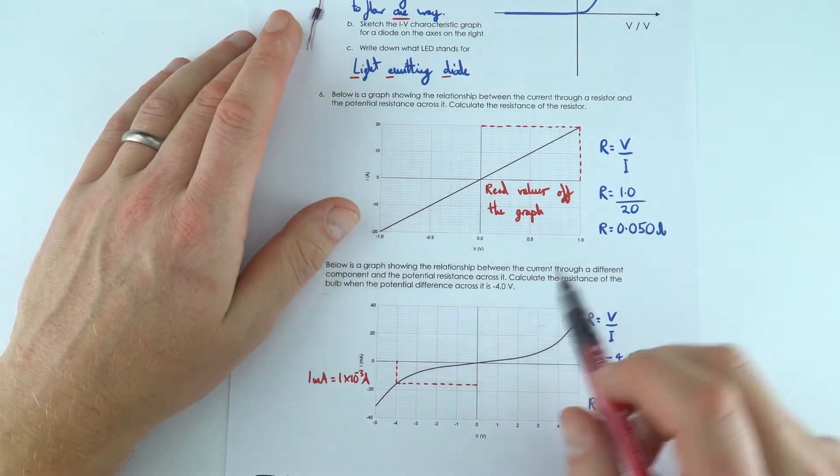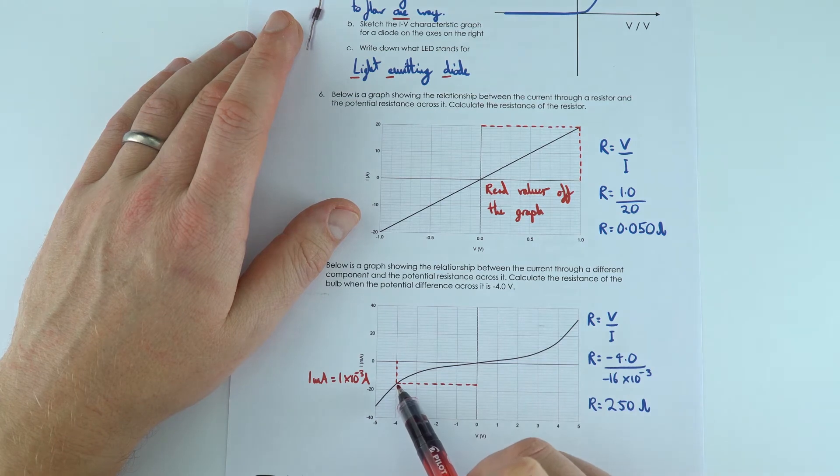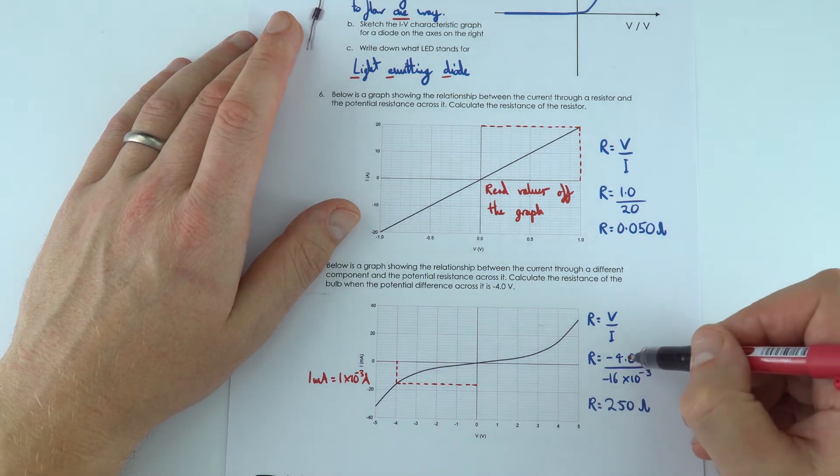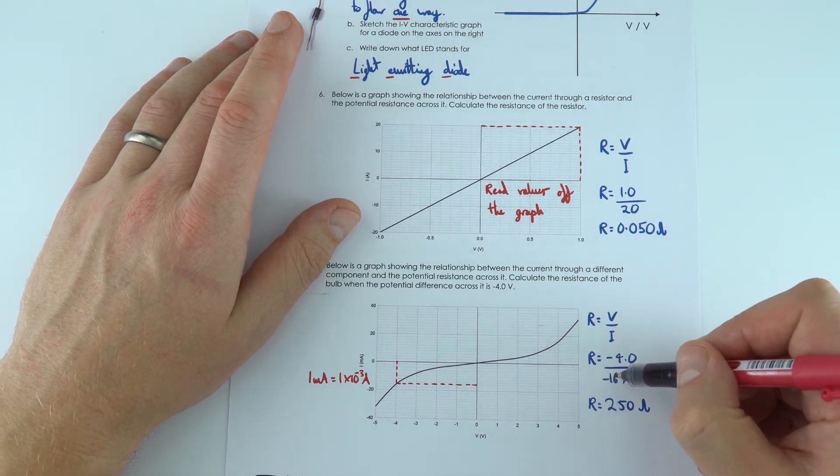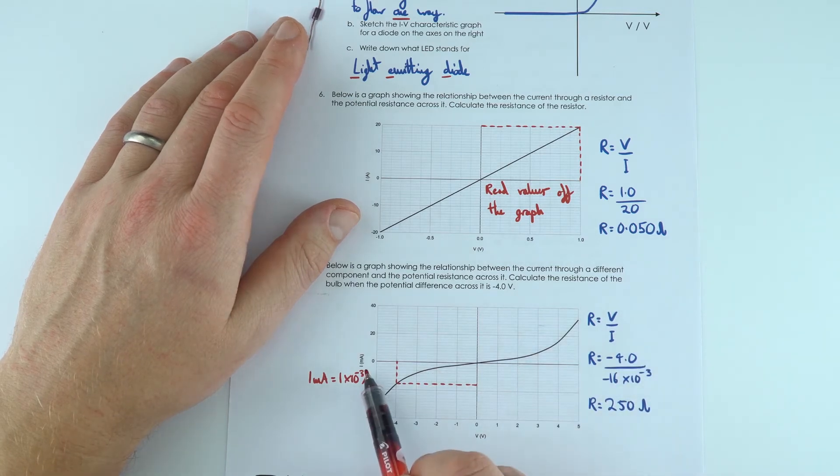all we're doing is at a value of minus 4, I'm reading off the value of the current. So at minus 4 volts, the current was minus 16 times 10 to the minus 3.